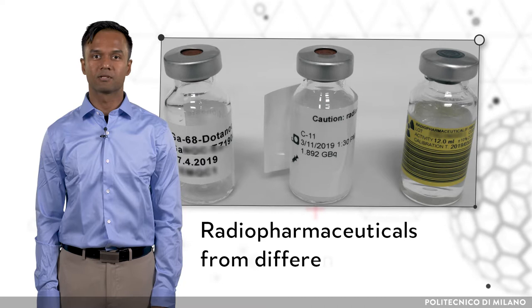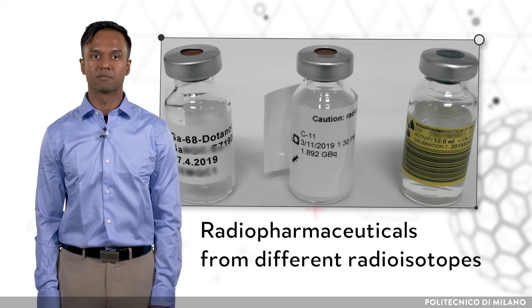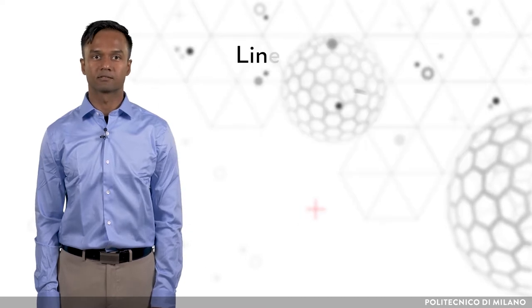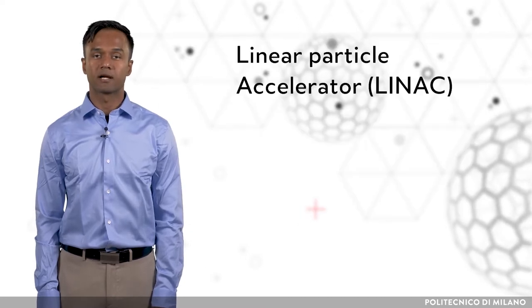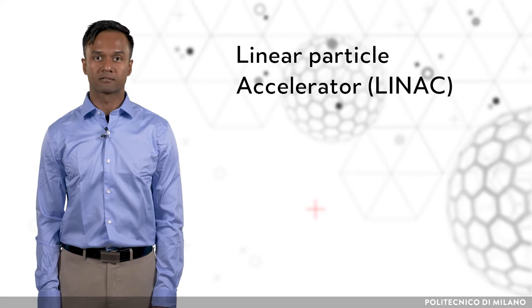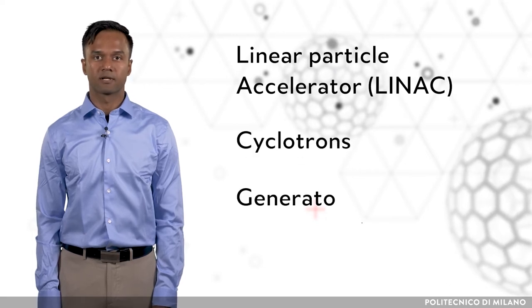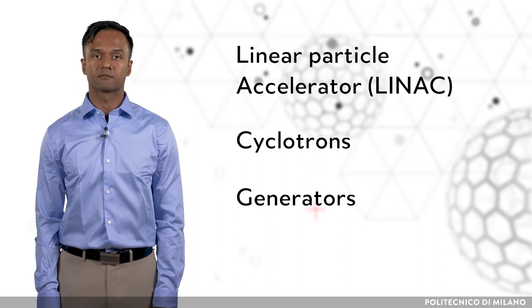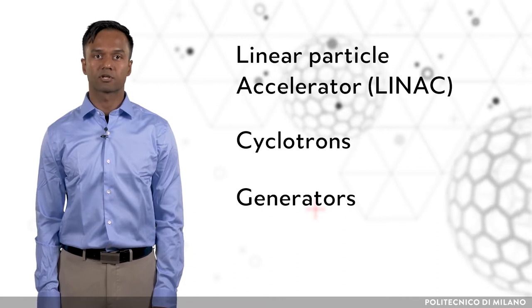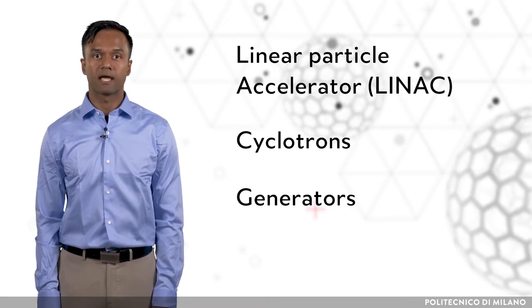Radioisotopes used in nuclear medicine can be produced using nuclear research reactors, linear particle accelerators (also called linacs), cyclotrons, and generators. They vary in terms of starting material, infrastructure, security concerns, and ease of preparation.